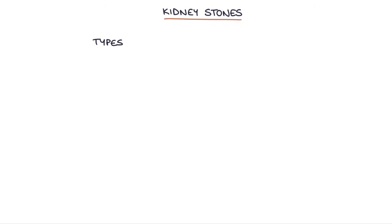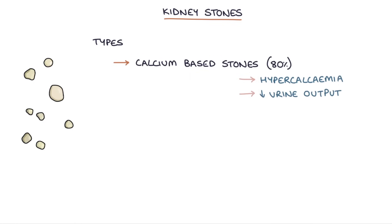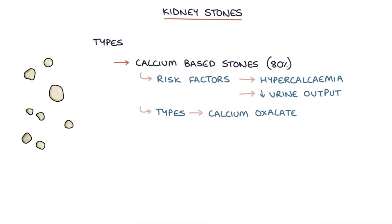Calcium-based stones are the most common type of kidney stone, accounting for about 80% of kidney stones. Having a raised serum calcium level or hypercalcemia and a low urine output are key risk factors for calcium collecting into a stone. There are two types of calcium stones: calcium oxalate, which is the more common type, and calcium phosphate stones.